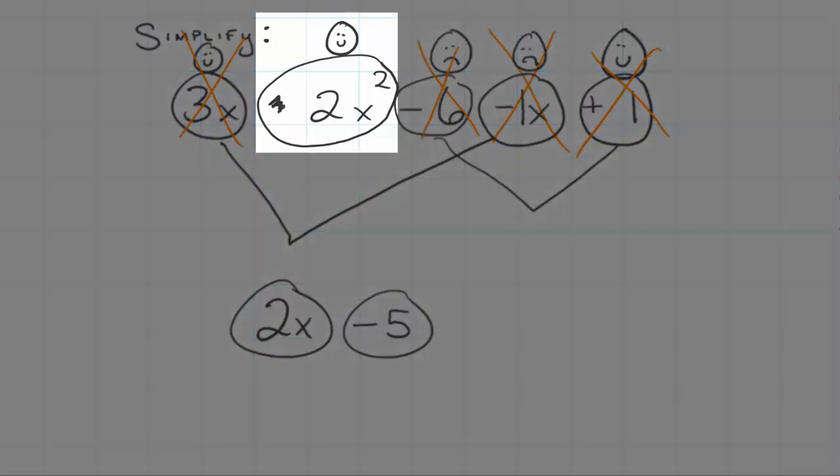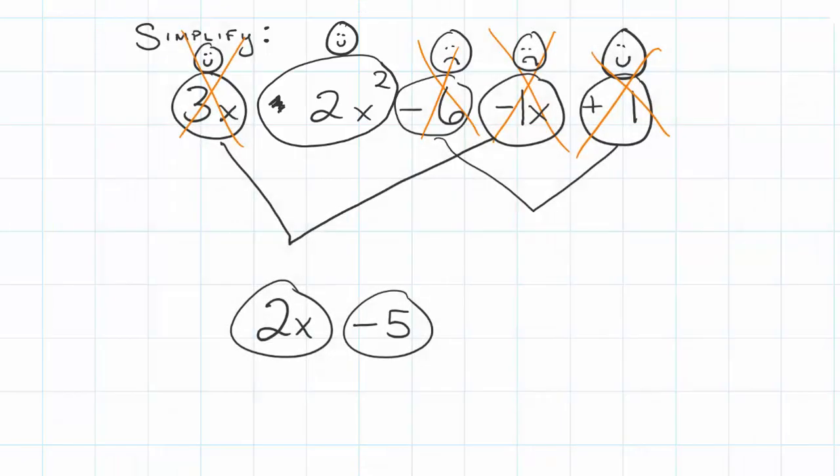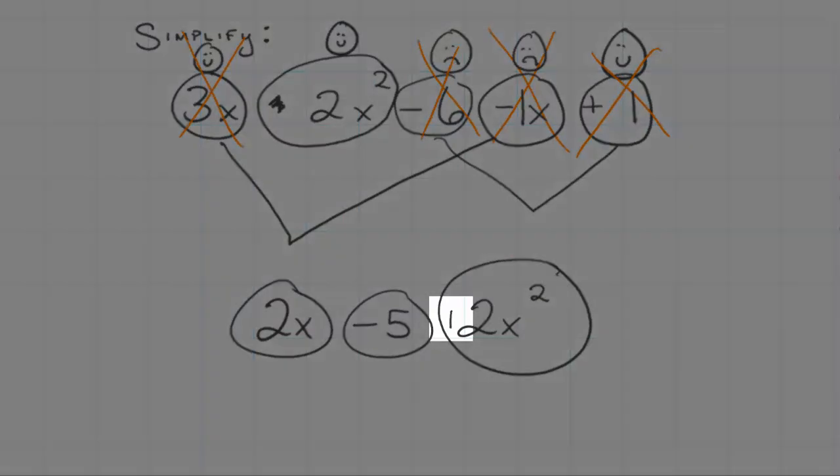I can cross those terms out. The only thing that's left is 2x squared. There's nothing that can combine with 2x squared in order to simplify this expression anymore. So we just bring it down. It's still part of our expression and since it's positive I got to put a plus sign in front of it.